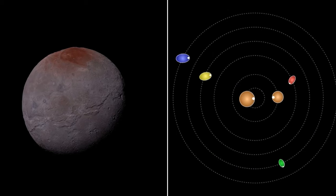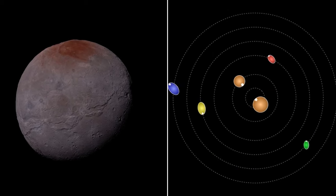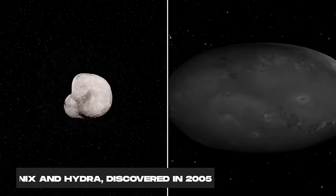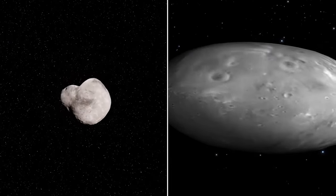In addition to Charon, Pluto has several smaller satellites, all irregular in shape. Nix and Hydra, discovered in 2005, measure several tens of kilometers in size.